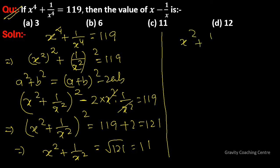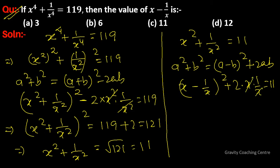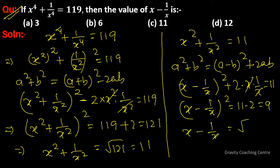Now using x² + 1/x² = 11, we apply the identity (x - 1/x)² = x² + 1/x² - 2 = 11 - 2 = 9. So x - 1/x = √9 = 3. The answer is 3, so option A is the correct answer.